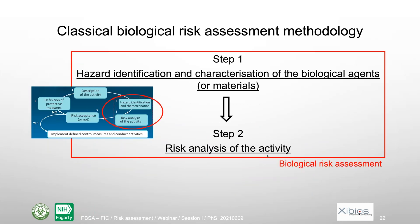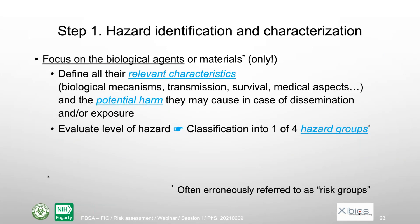Biological risk assessment is a two-step process. First, we look only at biological agents to do hazard identification and characterization — we define all relevant characteristics of the biological agents or materials and define the hazard they may represent for personnel, community, and environment. Then once we have that, we do the risk analysis of the activity. For hazard identification and characterization, we define all relevant characteristics: biological mechanisms, stability, transmission, survival, transmission modes, and medical aspects. We also evaluate the level of hazard using a classification into one to four hazard groups.